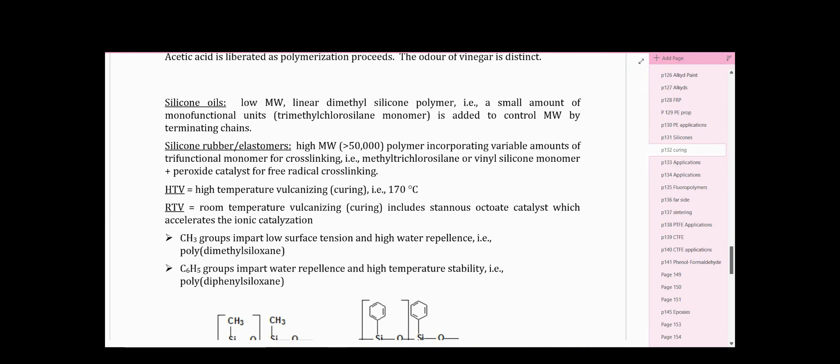So back to our silicone thermosets - rubbers, elastomers with molecular weights greater than 50,000 grams per mole, incorporating variable amounts of a trifunctional monomer that will allow cross-linking. So you could simply use methyl trichlorosilane, a small quantity of that, or sometimes a vinyl silicone monomer is used, and then a peroxide catalyst for cross-linking the vinyl groups. Either one gives you the ability to cross-link.